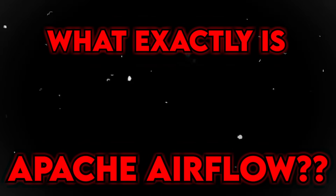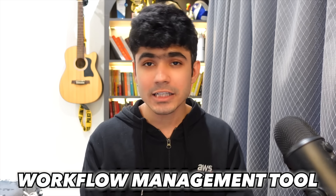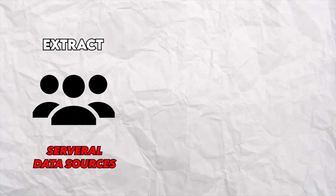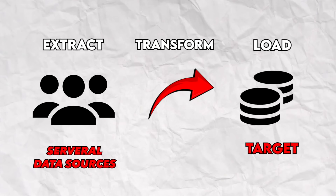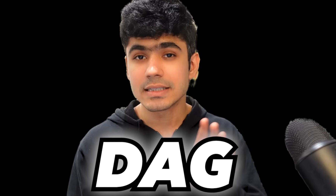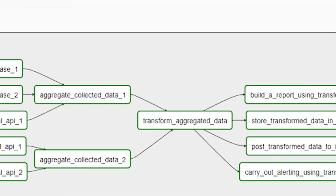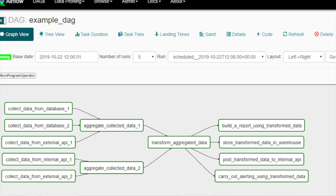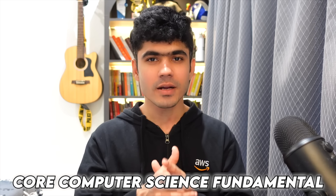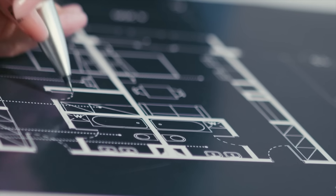Now that we understand why Apache Airflow exists, let's understand what it actually is. Apache Airflow is a workflow management tool. A workflow is a series of tasks that need to be executed in a specific order. Taking our previous example — we have data coming from multiple sources, we do some transformation in between, and then load that data onto some target location. This entire job of extracting, transforming, and loading is called a workflow. In Apache Airflow the same concept is called a DAG — a Directed Acyclic Graph. At the heart of Airflow is a DAG that defines the collection of different tasks and their dependencies.